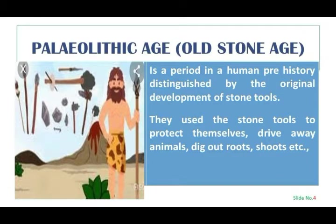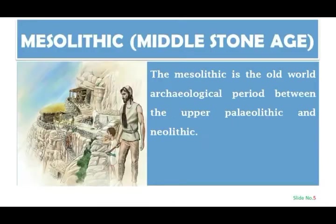The Paleolithic Age, also called the Old Stone Age, is a period in human prehistory distinguished by the original development of stone tools. They used stone tools to protect themselves, drive away animals, and dig out roots and shoots.